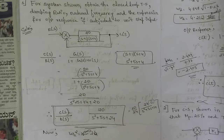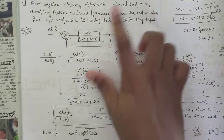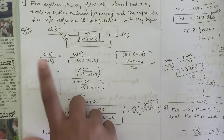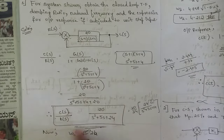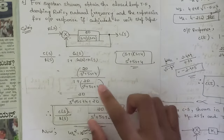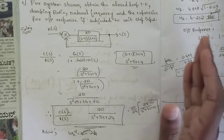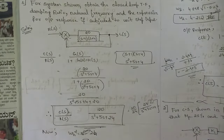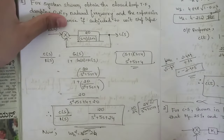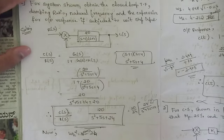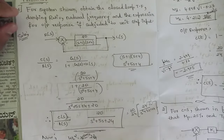For time domain specification problems, a transfer function or block diagram is given. Find C(s)/R(s), write it in the form ωₙ²/(s² + 2ζωₙs + ωₙ²), then extract ζ and ωₙ from the denominator, and calculate all time domain specifications. Many such problems have been discussed in the module.